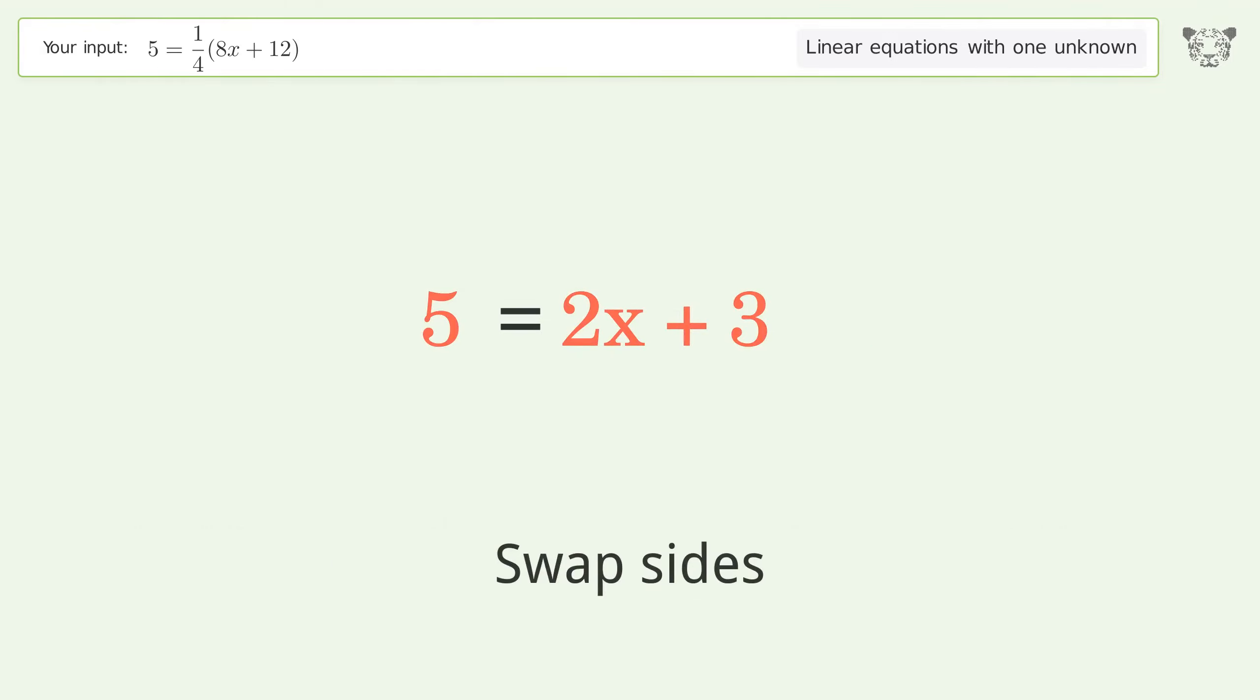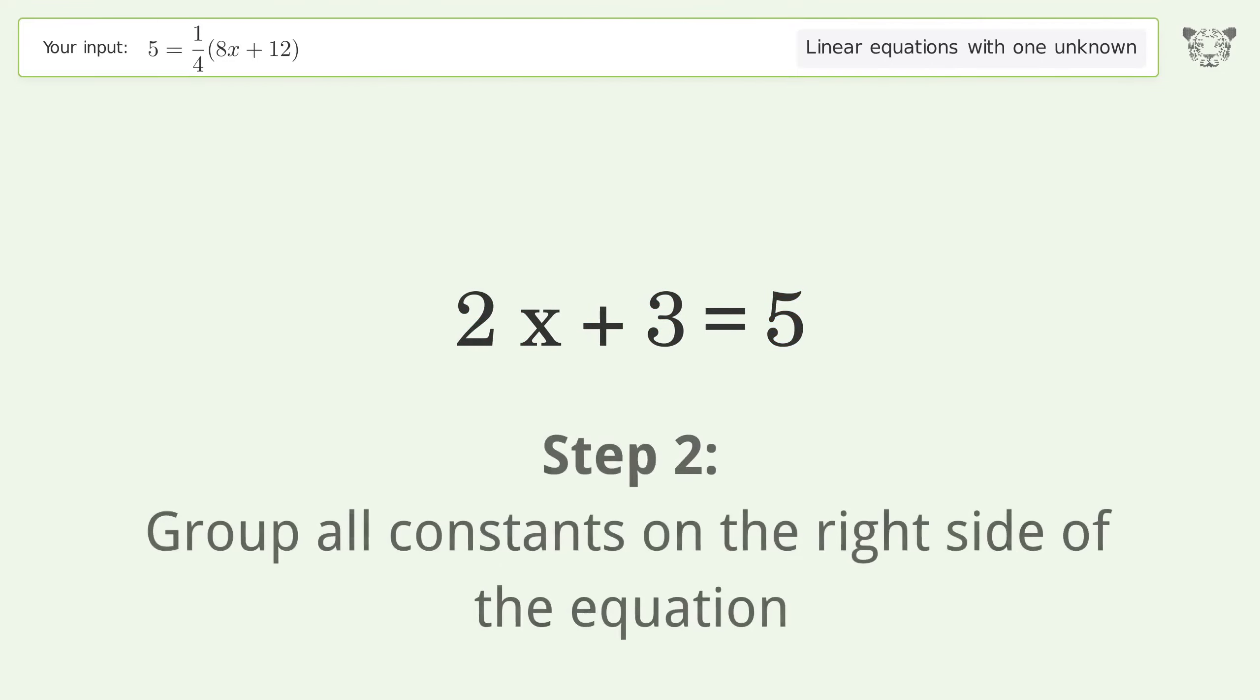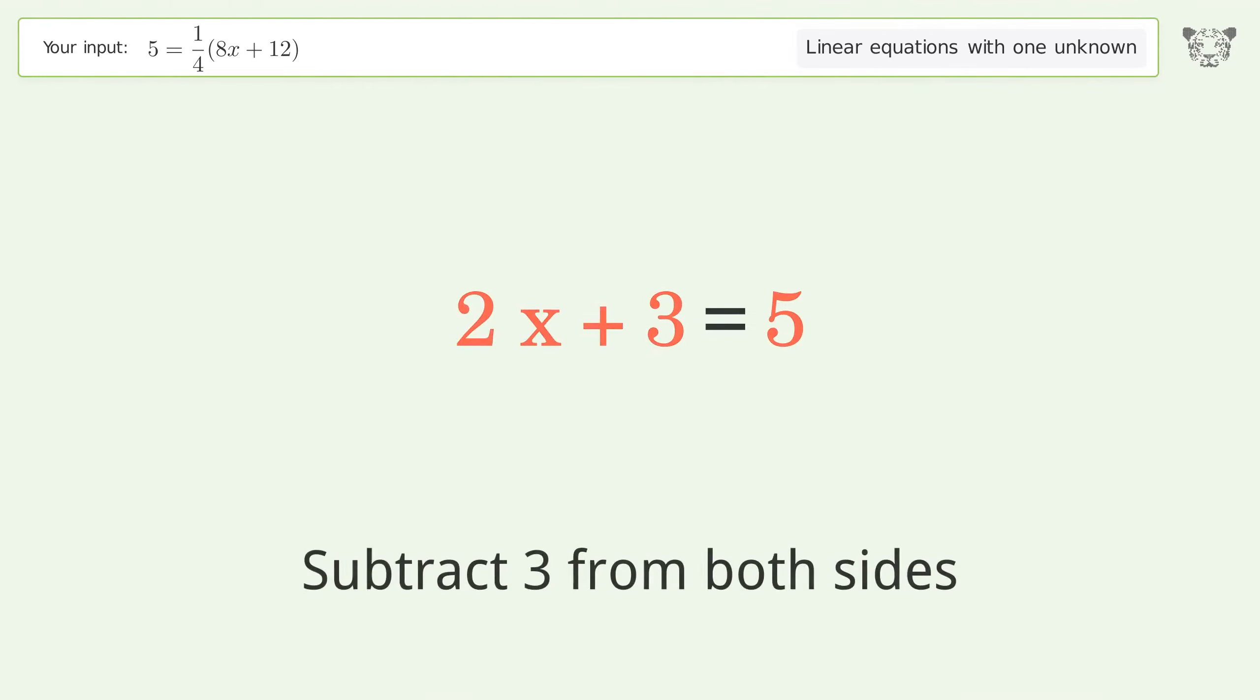Swap sides. Group all constants on the right side of the equation. Subtract 3 from both sides.